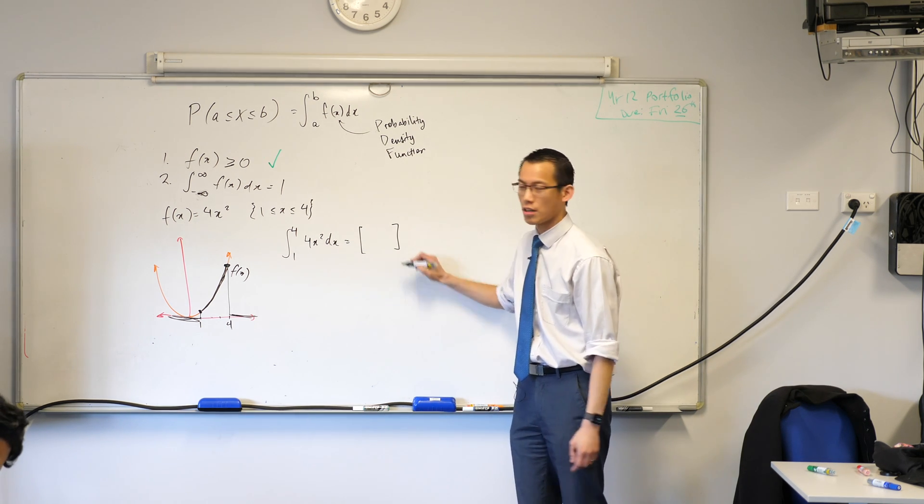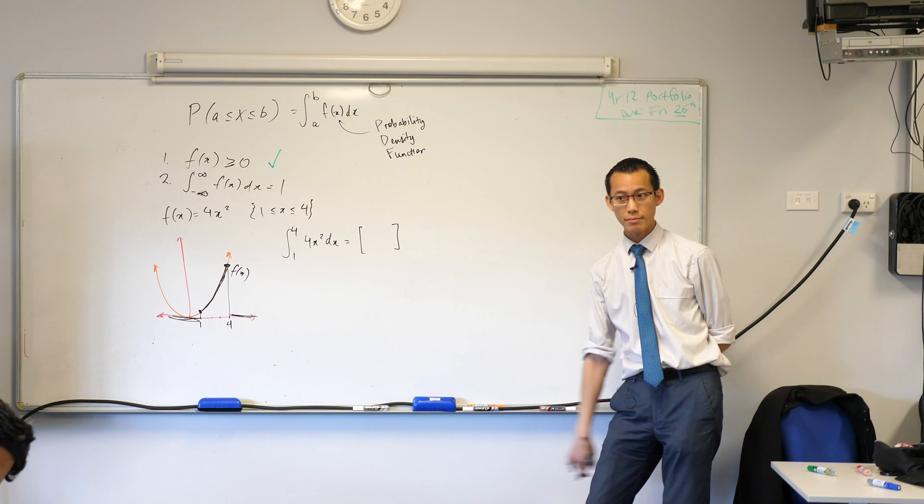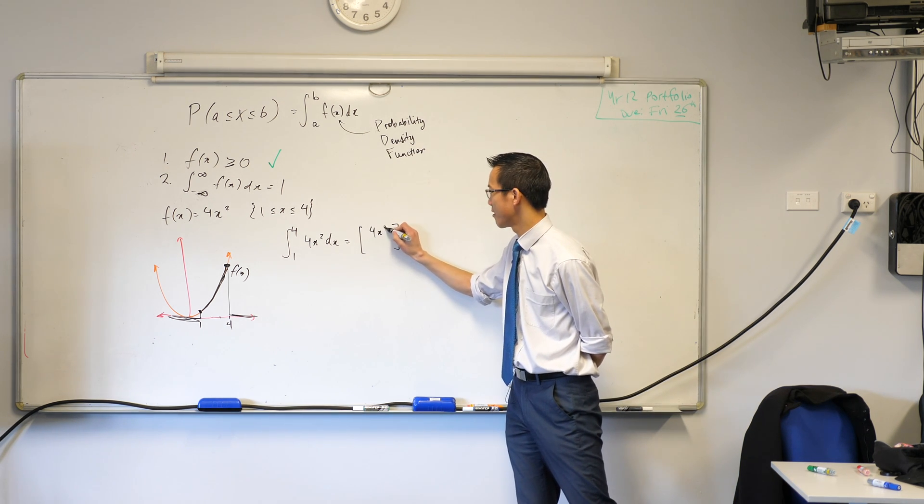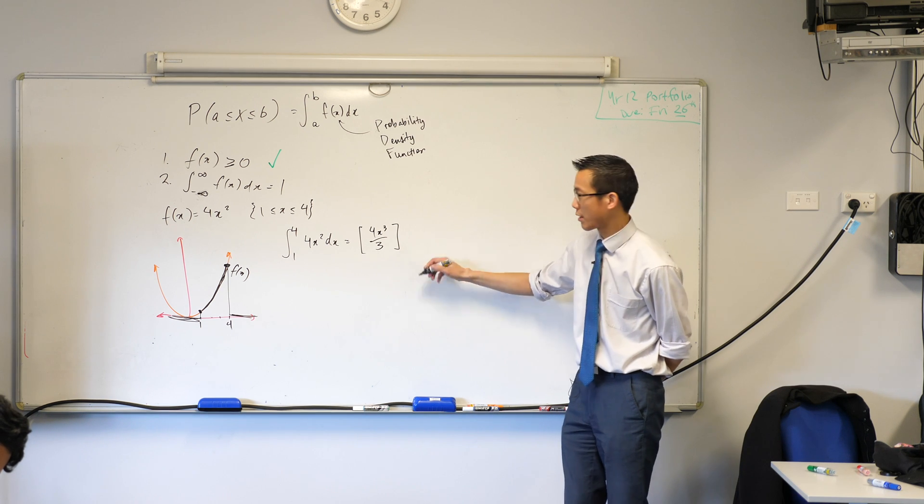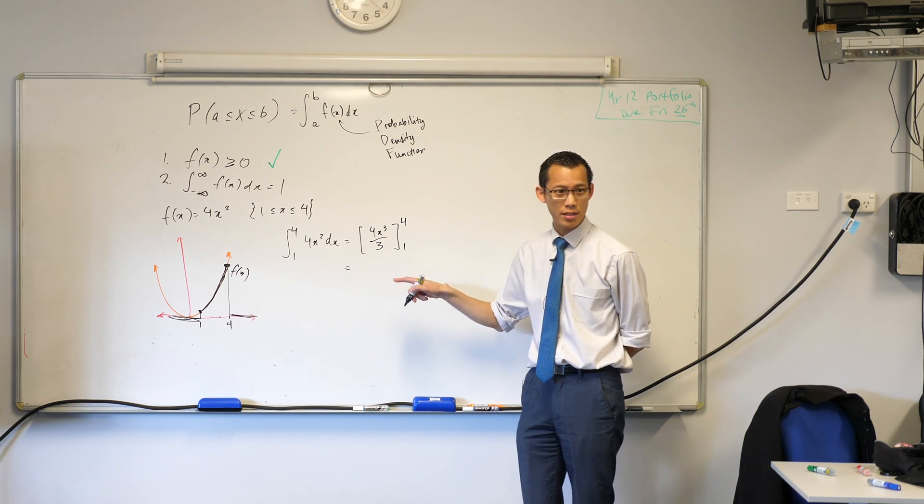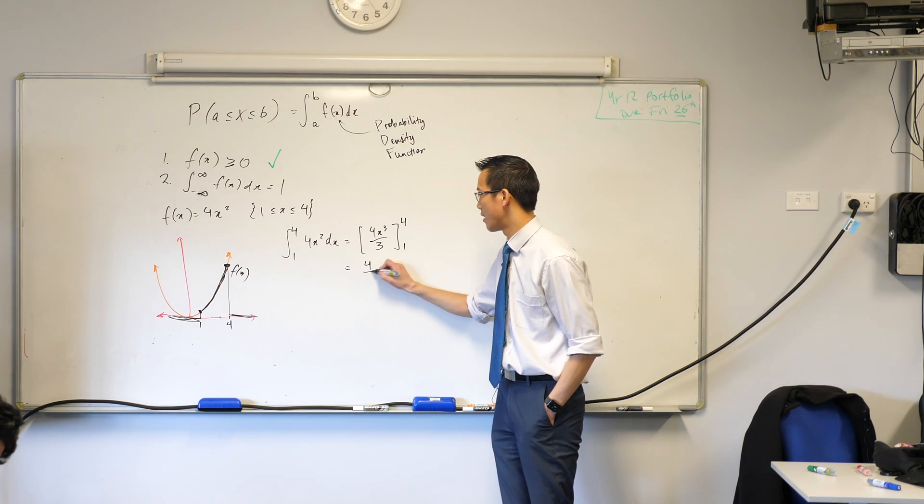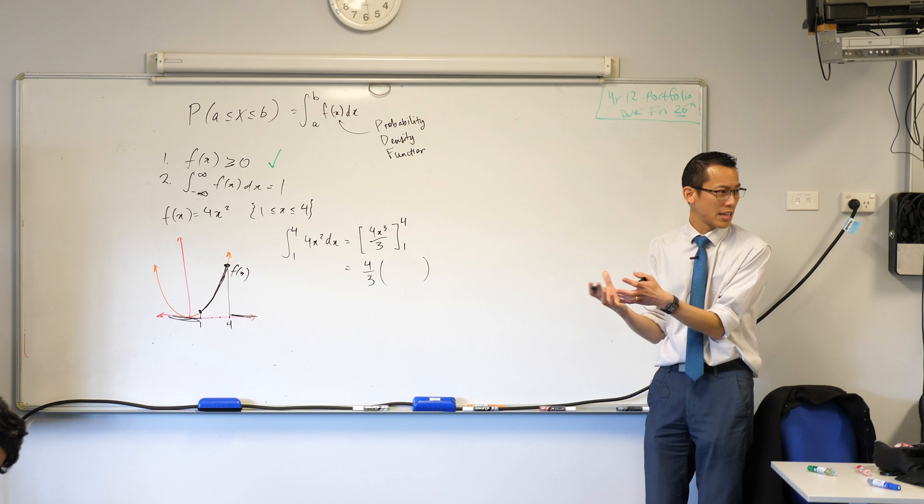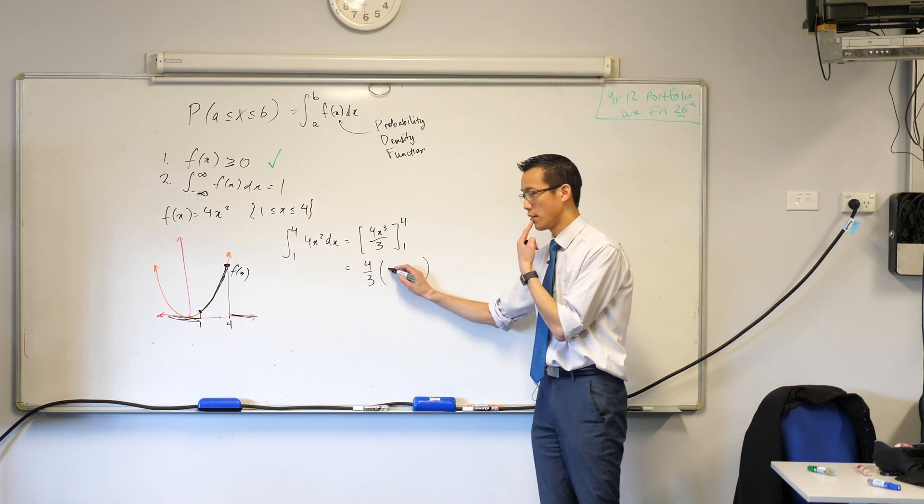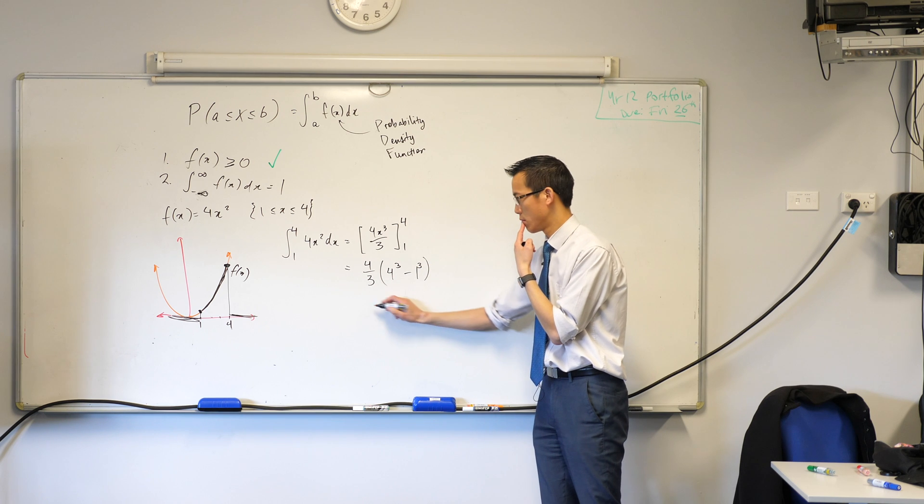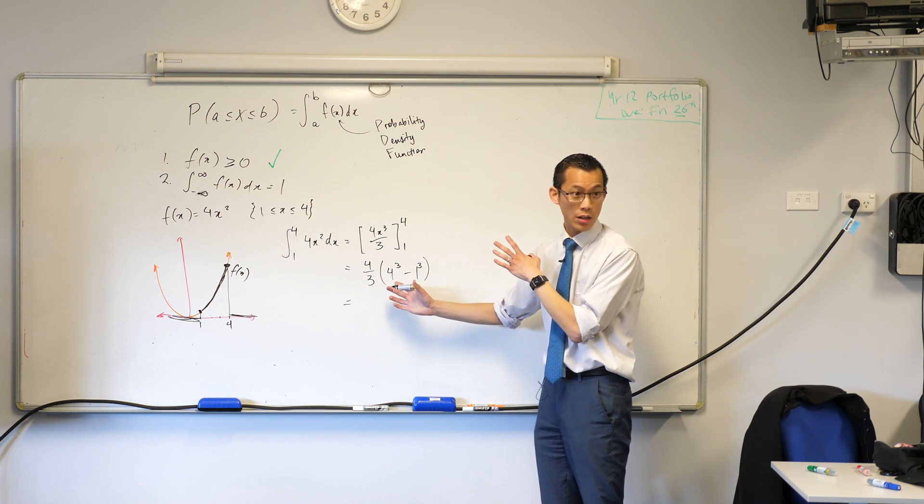What is the primitive that you end up with when you integrate 4x squared? 4x cubed on three. Very good. There's my primitive. Okay, so I'm going to go from one to four. That four thirds is just a constant. So I'm going to factorize that out the front. And then I'm going to evaluate what's left, which is x cubed. Okay, so I've got 4 cubed take away 1 cubed. So far so good? Is that okay? Upper boundary, lower boundary.